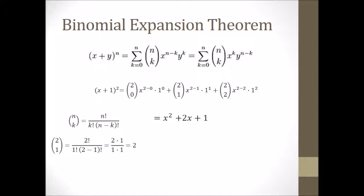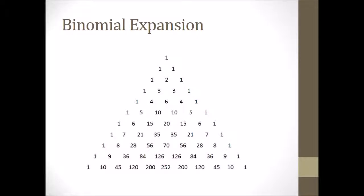I know this might be a little confusing, but I am going to cover it again in a practice problem. A quick way to remember the coefficients without doing the combination formula is by using Pascal's triangle. You start with the number 1, then write a 1 and a 1 beneath it. From there, build the triangle by adding up adjacent numbers: 1 plus 1 is 2, giving you 1, 2, 1; then 1, 3, 3, 1; and so on. Each row corresponds to binomial expansion powers — the first row is any binomial to the 0 power, then first, second, third, fourth power, and it keeps going. This is a quick way to remember the coefficients for binomial expansions.